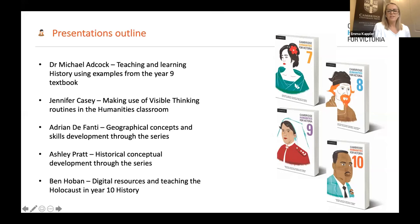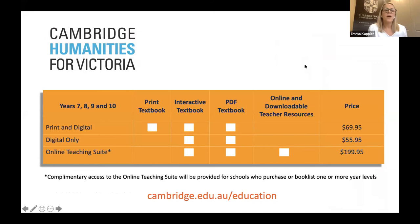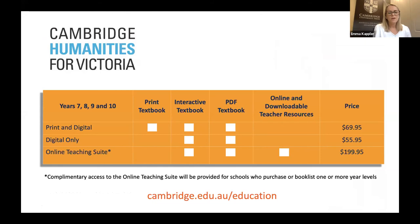Thank you everyone for those great presentations. Just to run through the availability of our new series: Year 7 is going to be published in early October, Year 8 will be at the end of October, Year 10 will also be at the end of October, and Year 9 is in stock and available now. Please do get in touch with your Cambridge rep if you would like to receive further information on the series, sample pages, or further digital presentations to help with your book listing decision making.